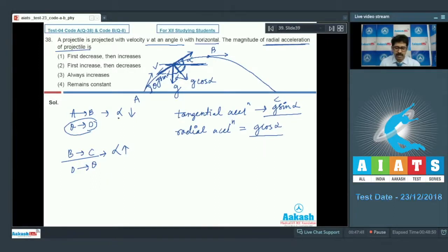g's component is g cos alpha and g's component in the tangent direction is g sin alpha. So at any point, the velocity direction of acceleration is tangential acceleration, g sin alpha. But the velocity normal direction is centripetal direction and radial direction, g cos alpha. A to B, alpha decreases. Alpha decreases, cos alpha increases. So centripetal acceleration and radial acceleration increases. B to C, alpha increases. So centripetal acceleration decreases. First increases, then decreases. So correct option is option number 2.